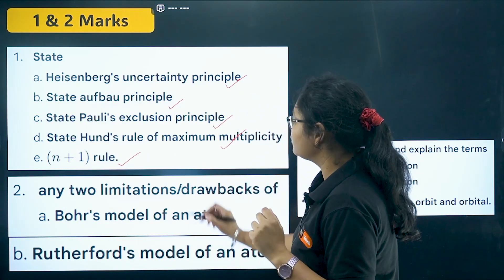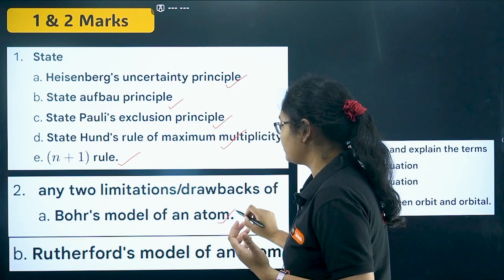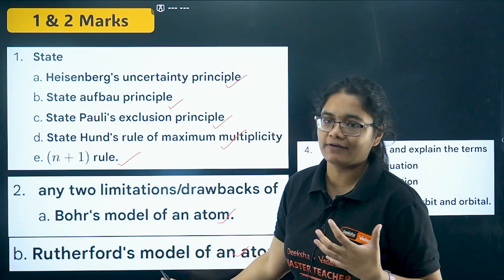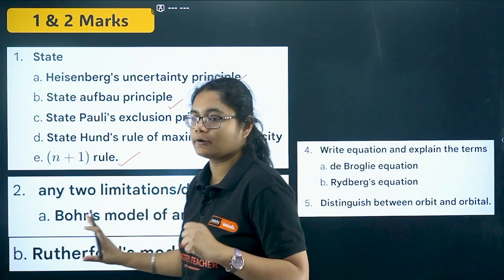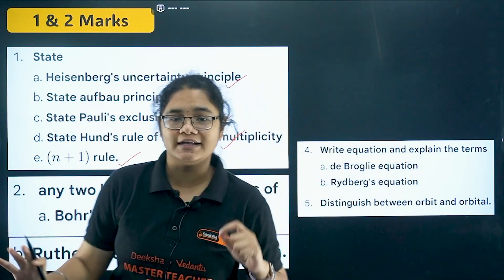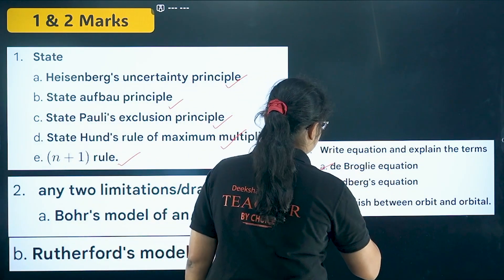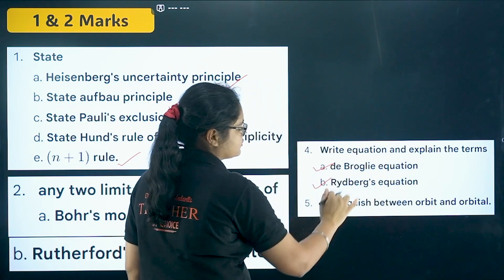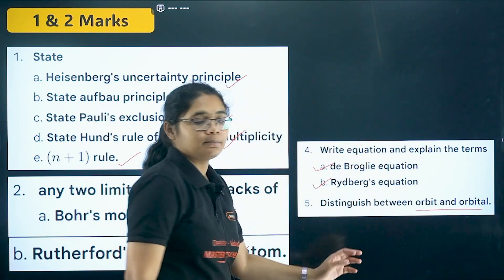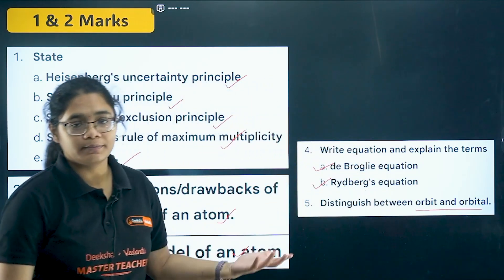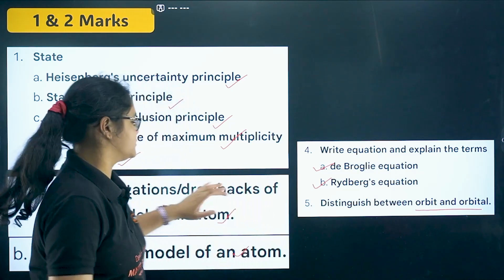Now coming to limitations or drawbacks of Bohr's model of the atom and Rutherford's model of the atom — these are important theoretical questions you can expect in one and two marker. Next is the De Broglie equation and the Rydberg equation — these are also important. You should also be able to distinguish between orbit and orbital — two to three points you should focus on.